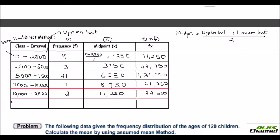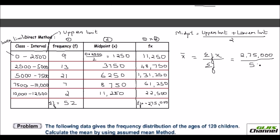Now find the total of the frequency — this is sigma f. Adding 9 plus 13 plus 21 plus 7 plus 2 gives 52. Then find the total of sigma fx, the last column. The total is 2,75,000. For the direct method, the mean is sigma fx divided by sigma f: 2,75,000 divided by 52. Rounded to the nearest pound, that is 5,289.